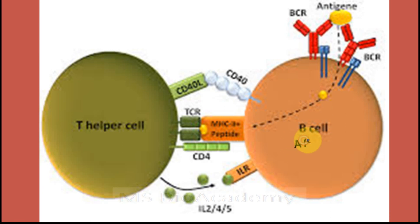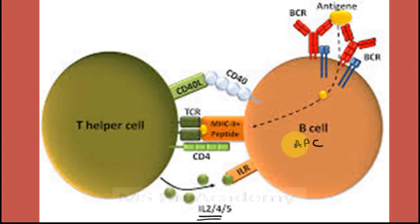As you can see in this diagram, this is a T helper cell and this is the T cell receptor which is recognizing the peptide presented by the MHC class 2 molecule. This is a B cell acting as the antigen presenting cell, presenting the peptide with MHC class 2 molecules to the T helper cells. This activates the T helper cells, which release cytokines such as IL-2, IL-4, and IL-5.